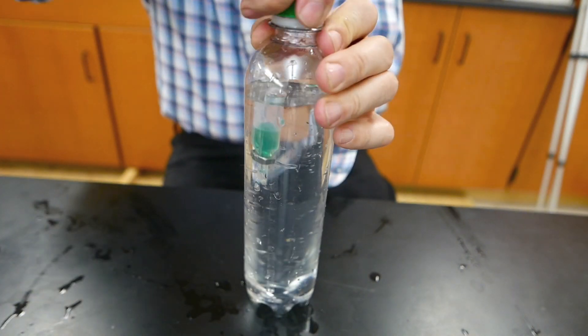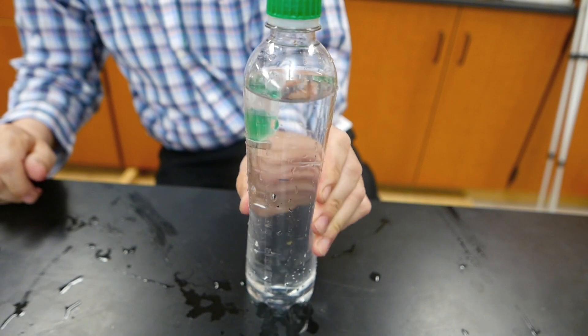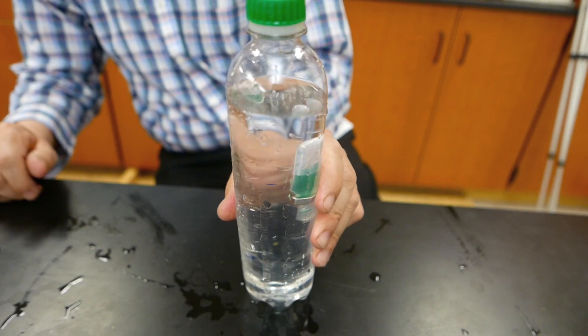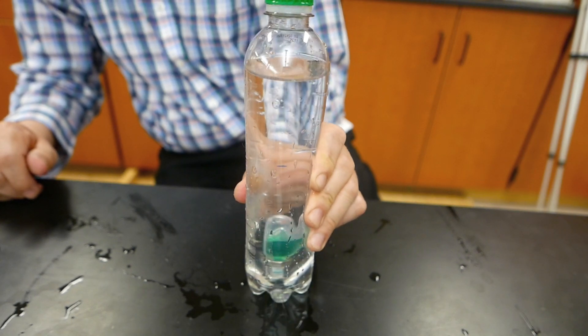Cap the bottle, give it a squeeze, and down it goes. In this case, no water actually goes into the dropper, the bulb simply compresses.